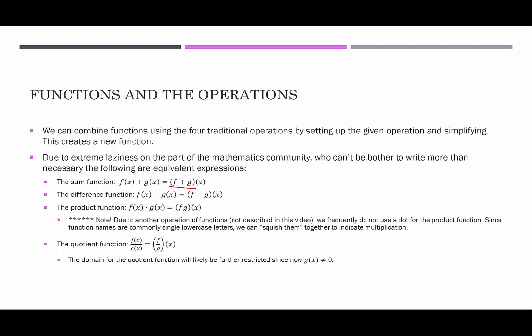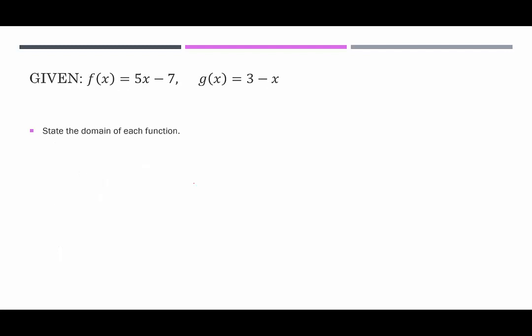The quotient function is the only one that will potentially have additional restrictions on the domain. Whatever restrictions apply to f or g also apply to the sum, difference, and product functions, but the quotient function has something extra: the denominator — whatever function is in the denominator — cannot equal zero.